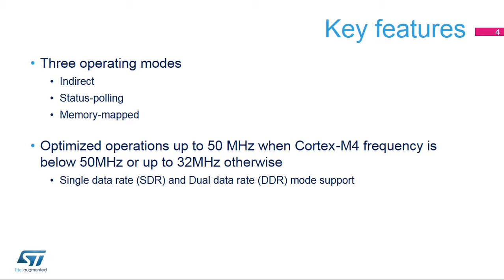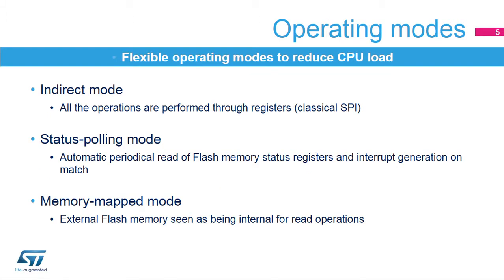When the Cortex-M4 frequency is higher, up to 64 MHz, the Quad SPI prescaler must ensure a clock division by at least 2. The Quad SPI memory interface operates in three modes.